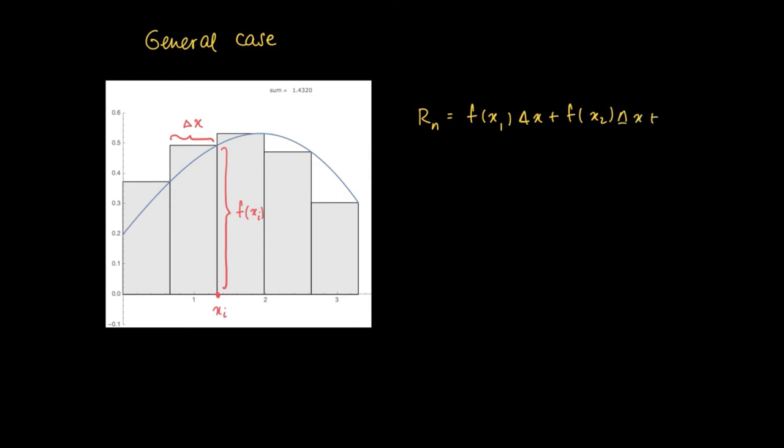So we find the first interval has height f(x_1) times delta x as the surface area. The second interval, etc., until the nth interval—the final interval has height f(x_n) and width delta x, so it contributes f(x_n) times delta x to the surface area.